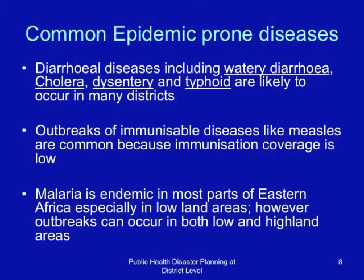Common epidemic-prone diseases include diarrheal diseases like watery diarrhea, cholera, dysentery, and typhoid — these are likely to occur in many districts in the East African region. Outbreaks of immunizable diseases such as measles are common because immunization coverage is low. Malaria is endemic in most parts of Eastern Africa, especially in the lowland areas.